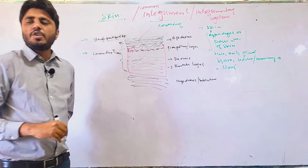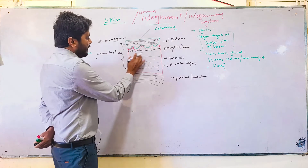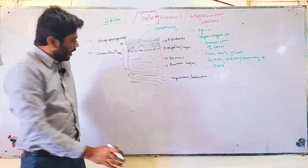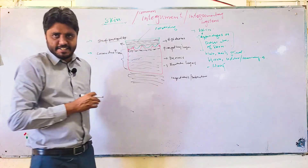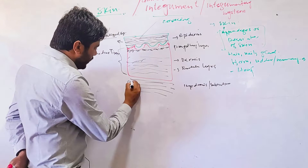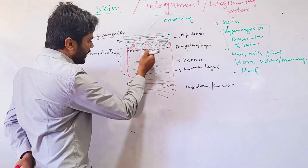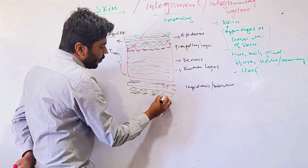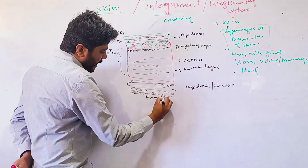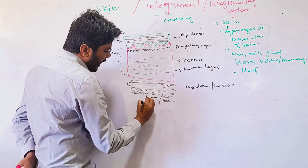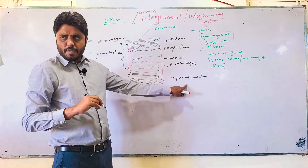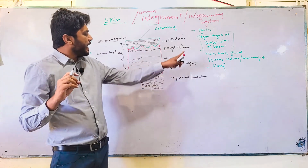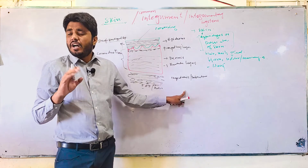The dermis is divided into two layers, and it is connective tissue. In the hypodermis, or subcutaneous region, you will find blood vessels, nerve vessels, and adipose tissue — fat cells. That is the structure of skin: epidermis, dermis, and hypodermis.